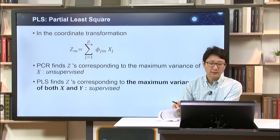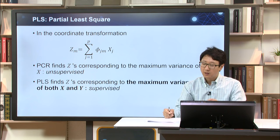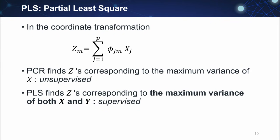Next is partial least squares. In the coordinate transformation, the new coordinate g is expressed by the weighted sum of the original coordinates of x. In PCR, we find this new direction g according to the maximum variance of x — this is a totally unsupervised way. It's based on the assumption that the maximum variance of x will be correlated with the variance of the output. Sometimes this is a reasonable assumption, but in general it's not that efficient. So in partial least squares, we try to find the new coordinate g corresponding to the maximum variance of both x and y. This is a supervised way.